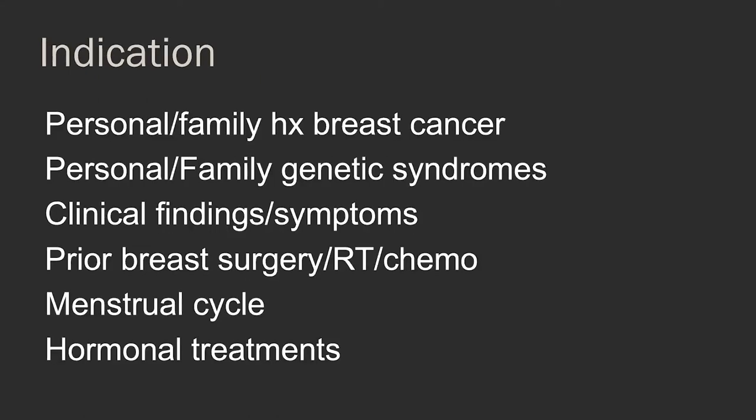For indications, you want to indicate why the study is being done: does the patient have a personal or family history of breast cancer, is this a screening study, do they have a personal or family genetic syndrome, any clinical findings or symptoms? Is there a history of prior breast surgery, radiotherapy, chemo, or hormonal therapy? And if they are premenopausal, where they are in their menstrual cycle, because it's going to affect your interpretation.